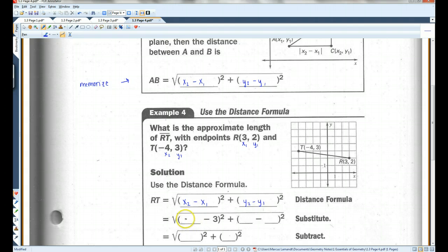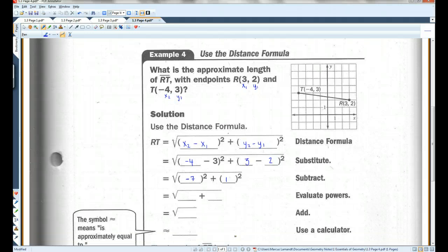X2 is negative 4. Y2 is 3 and Y1 is 2. I just plugged in these numbers into this equation. Negative 4 minus 3 is negative 7. 3 minus 2 is 1. Negative 7 squared is positive 49. 1 squared is 1. 49 plus 1 is 50.